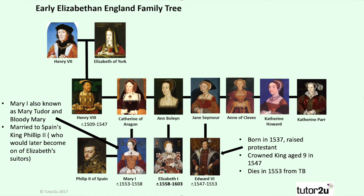Henry had six wives. His first wife, Catherine of Aragon, gave birth to their daughter, Mary I. His second wife, Anne Boleyn, gave birth to Elizabeth I, and his third wife, Jane Seymour, gave birth to Edward VI.